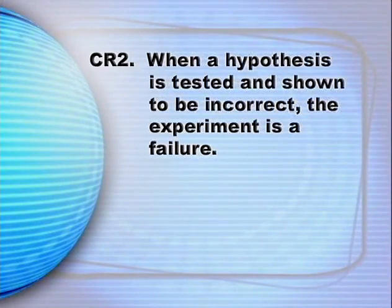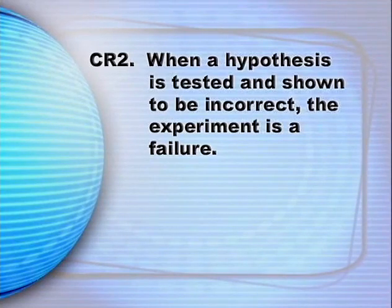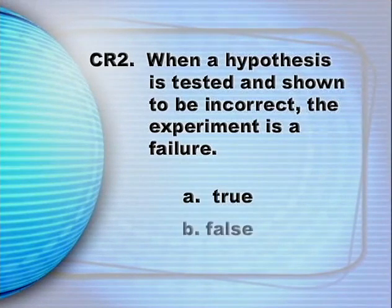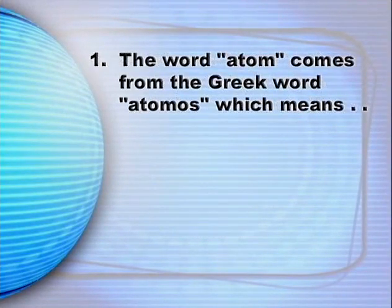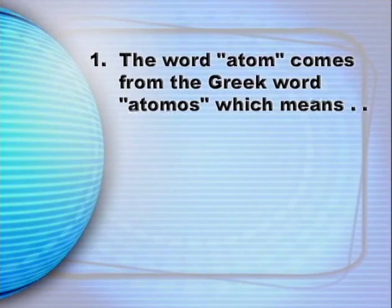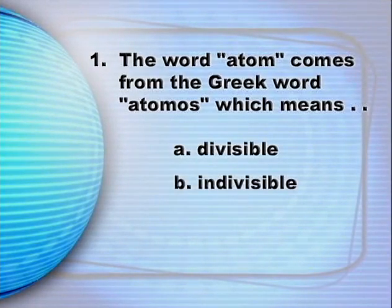Cumulative review question number two, true or false: When a hypothesis is tested and shown to be incorrect, the experiment is a failure. A. True. B. False. Now question number one from today's lesson: The word atom comes from the Greek word atomos, which means: A. Divisible. B. Indivisible.